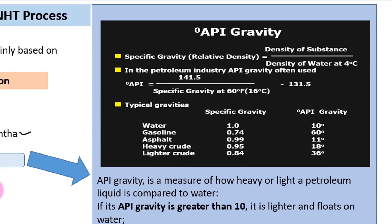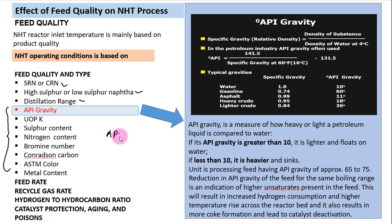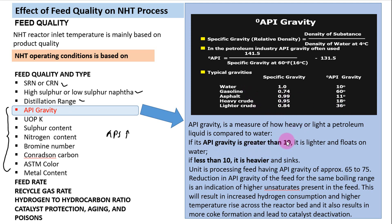As API gravity increases, your petroleum product becomes lighter. If API is lower, it indicates the petroleum liquid is heavier in nature. Comparing with water: if API is greater than 10, the liquid is lighter and floats on water. If API is less than 10, it is heavier and sinks.